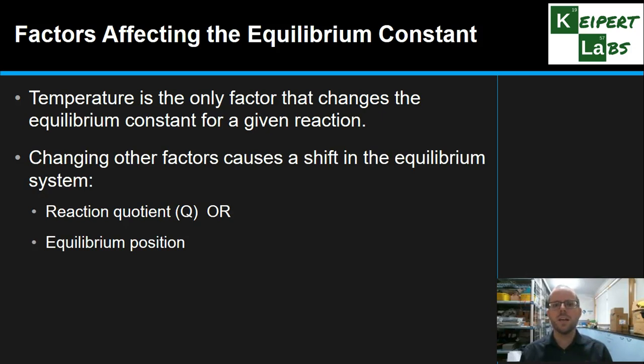But it's important for us to recognize that changing other factors like concentration, increasing or decreasing things, changing the pressure or the volume of the system, or adding a catalyst. In the case of a catalyst, it doesn't shift the equilibrium position, whereas these other factors will cause a shift in the equilibrium system. So, the reaction quotient, Q, this idea of the amounts of different things that will be shifted in that moment, or the equilibrium position if we're thinking qualitatively, on the left-hand side or the right-hand side.